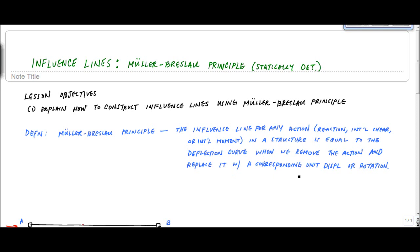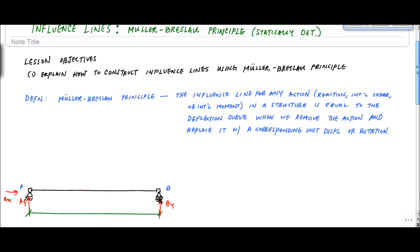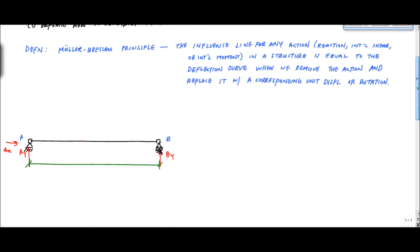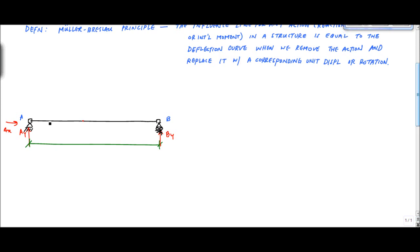And it's like, what? What does that mean? But what they discovered is that if I want to find the influence line, let's say for this simply supported beam, and specifically I want to find the influence line for the reaction at A, the vertical reaction AY here. So I want to find the influence line for AY.